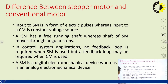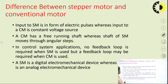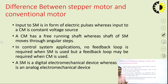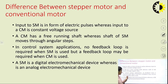The conventional motor has a free-running shaft, whereas the shaft of the stepper motor moves through an angular step. In control system applications, this is a big advantage — no feedback loop is required when a stepper motor is used, but a feedback loop may be required with a conventional motor such as an induction motor, DC motor, or synchronous motor. The stepper motor is a digital electromechanical device, while the conventional motor is an electromechanical device.